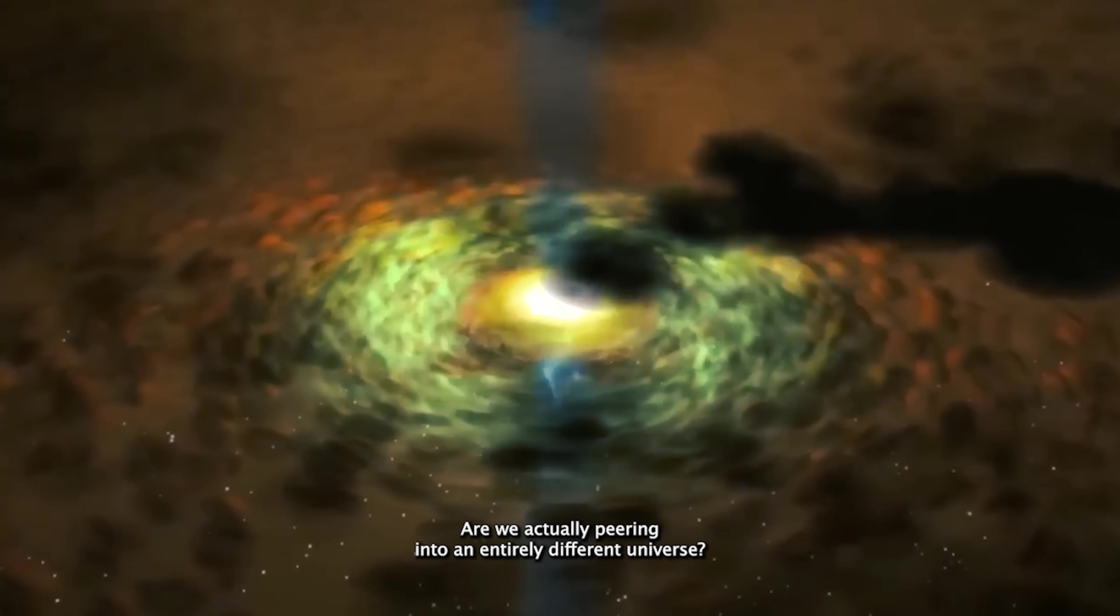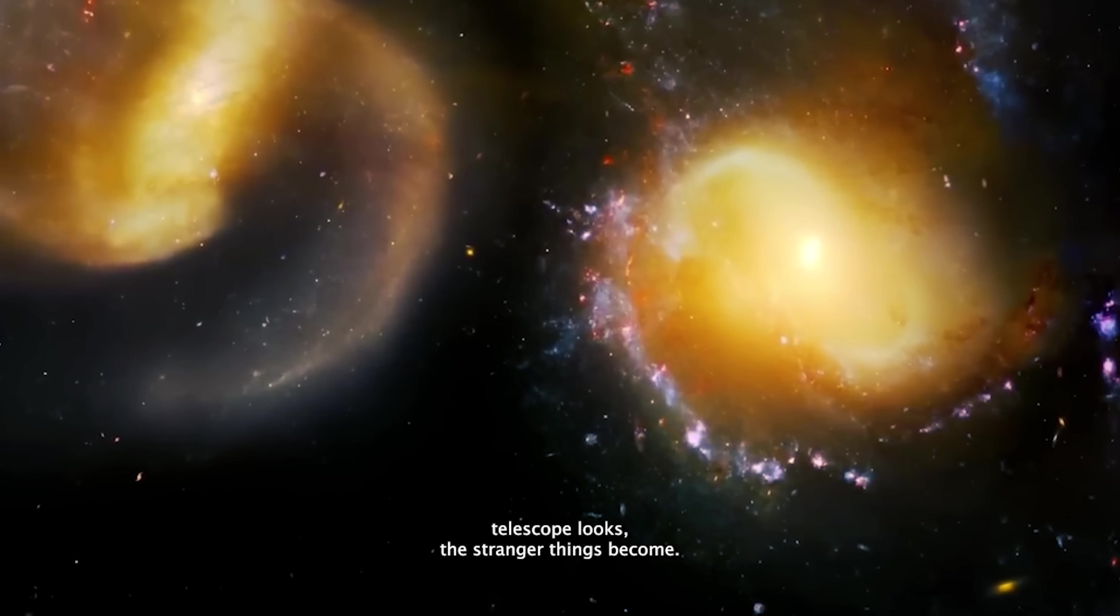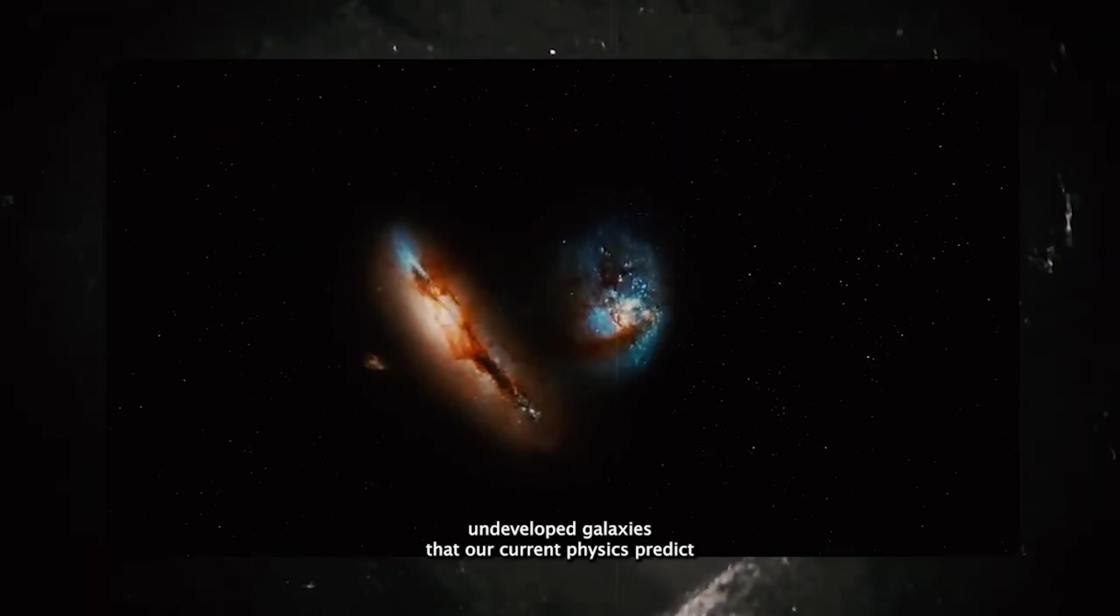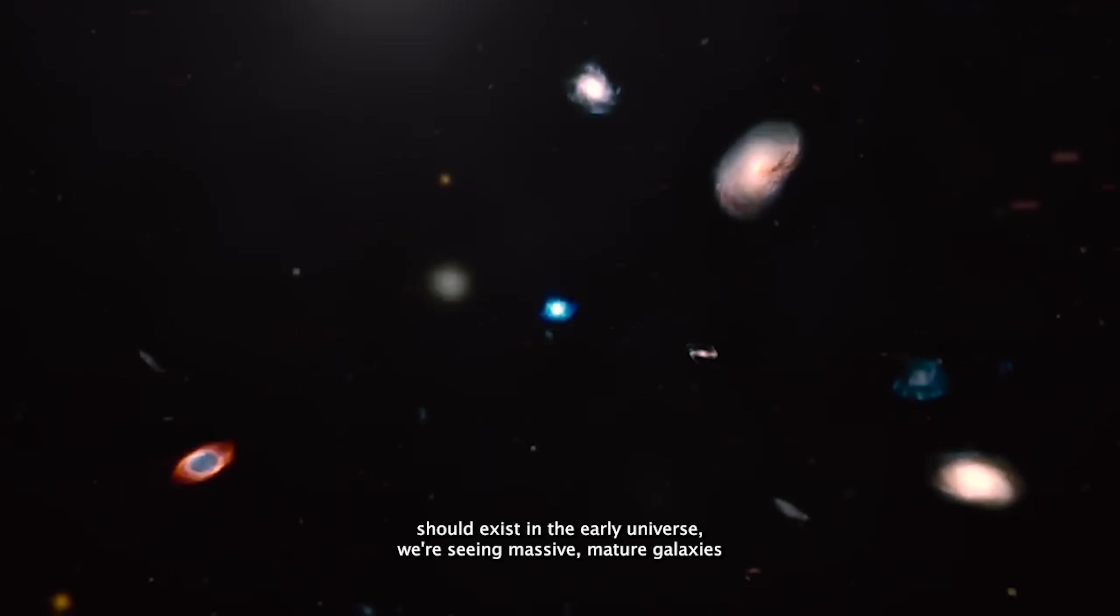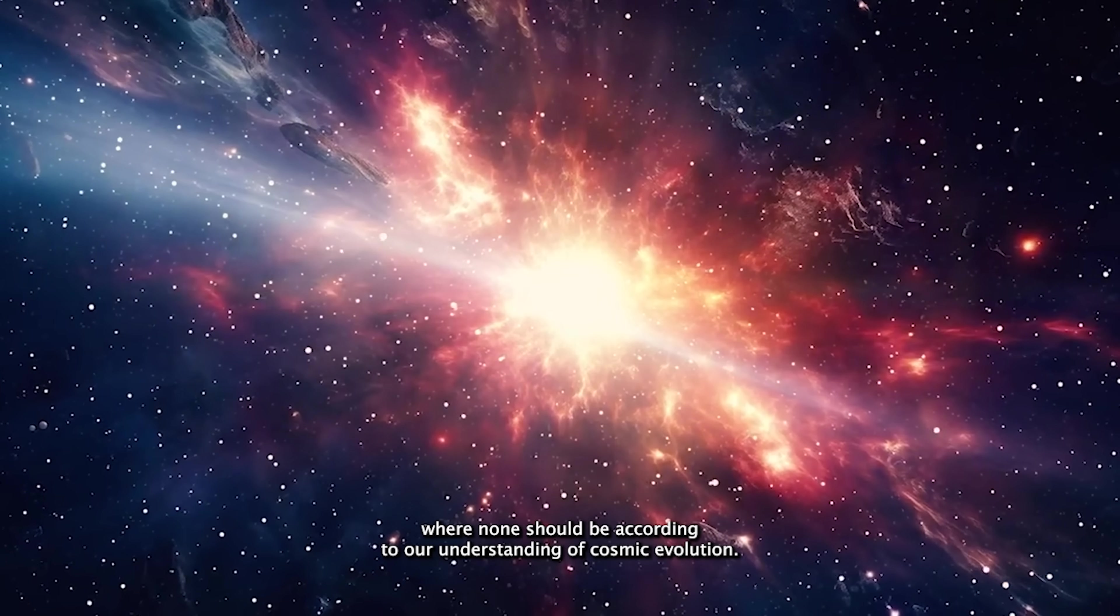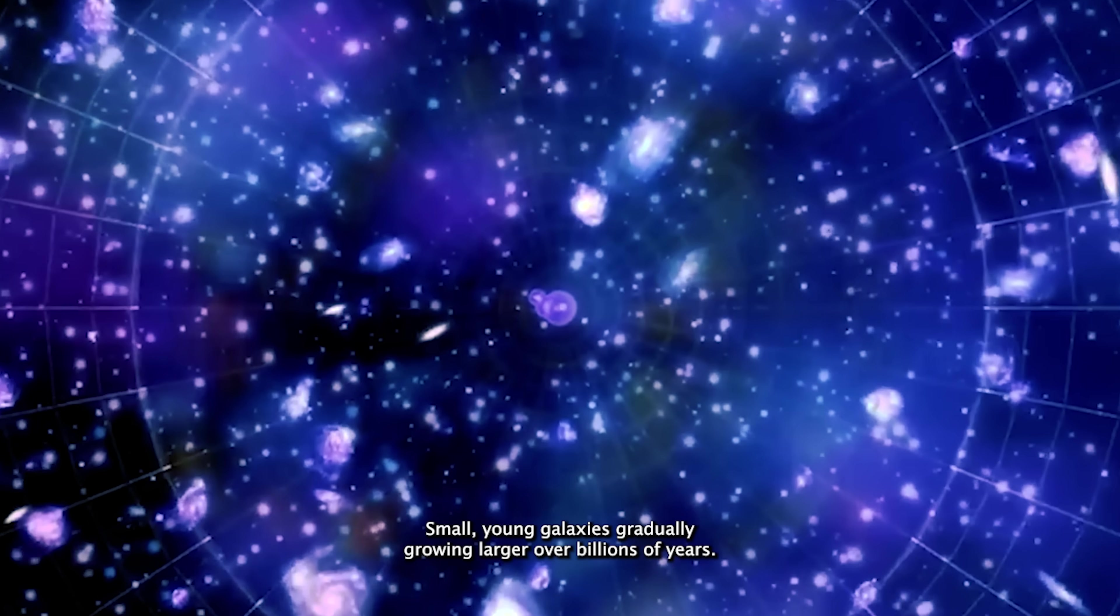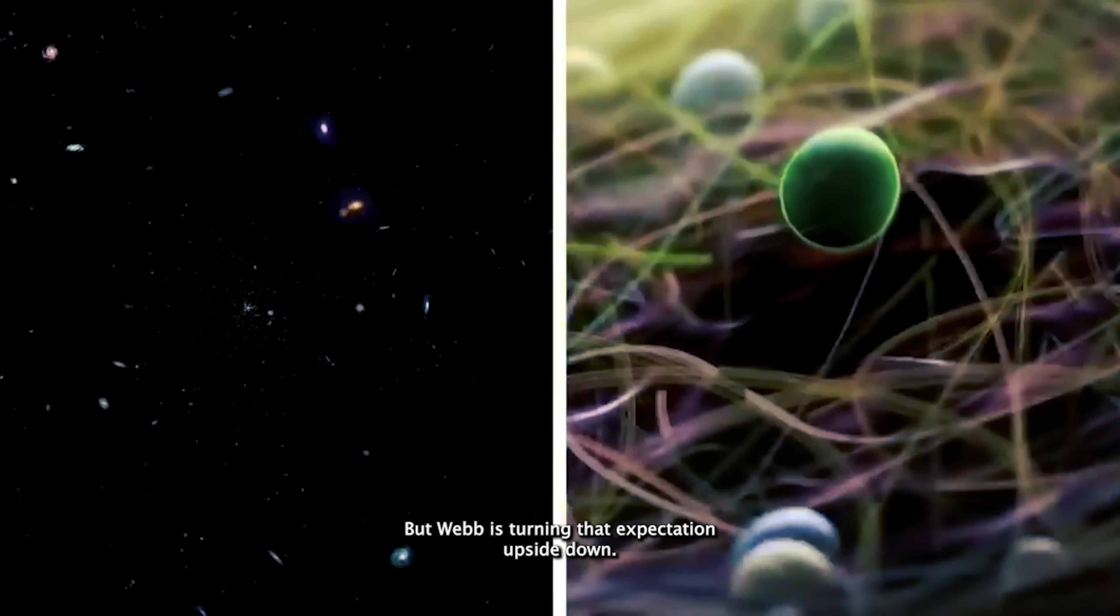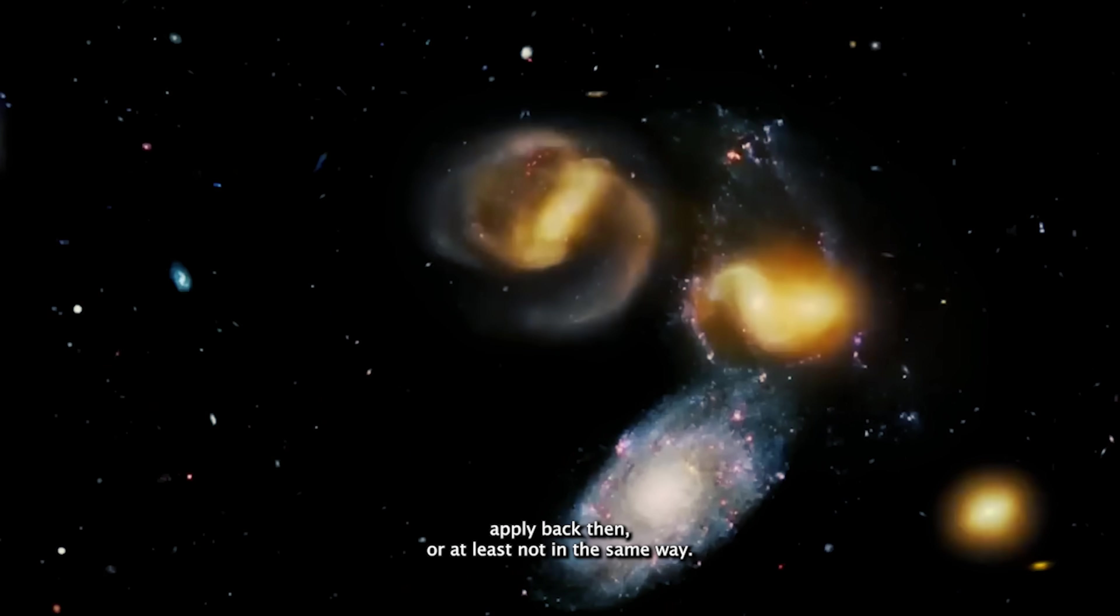These discoveries are forcing scientists to ask an extraordinary question. Are we actually peering into an entirely different universe? The deeper the Webb Telescope looks, the stranger things become. Instead of spotting the small, undeveloped galaxies that our current physics predicts should exist in the early universe, we're seeing massive, mature galaxies where none should be. According to our understanding of cosmic evolution, the further we look back in time, the simpler things should get. Small, young galaxies gradually growing larger over billions of years. But Webb is turning that expectation upside down.